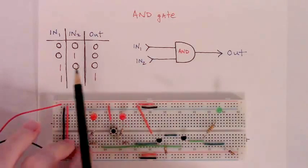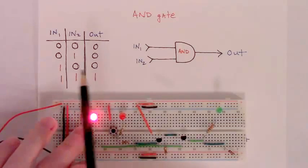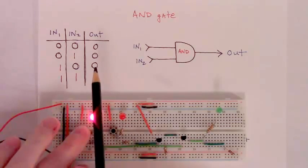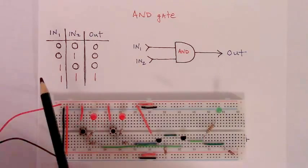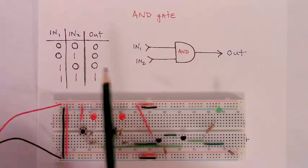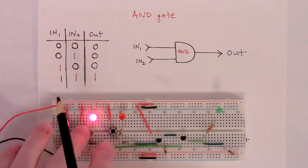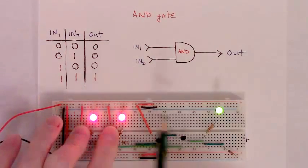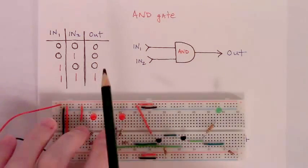Then we can move down to the third row in the truth table where input one is high, input two is low, and the output is low — and that's what we have here. The final row is the only case in which an AND gate outputs a high, or true if we're talking in terms of true or false. That's when its first input is high and its second input is high; then its output is also high. In all other cases it emits a low.